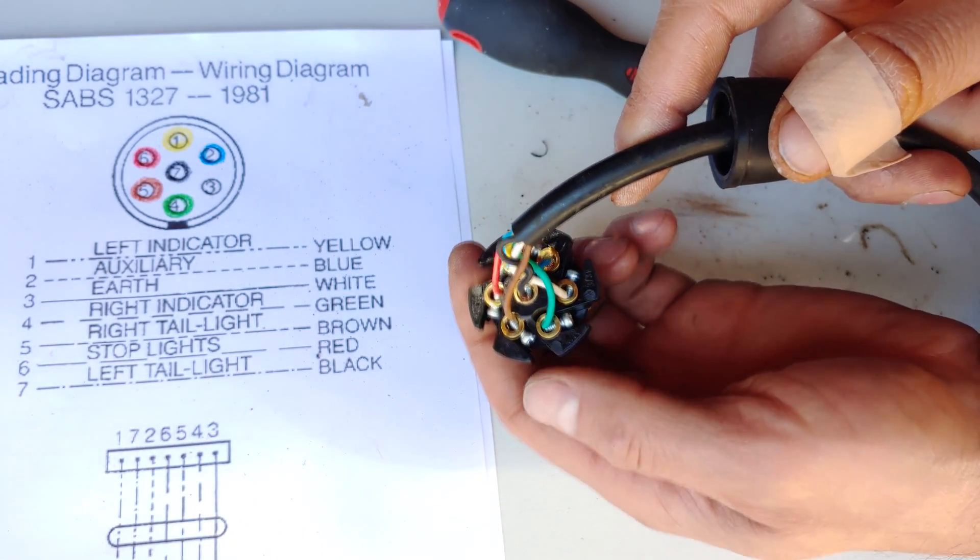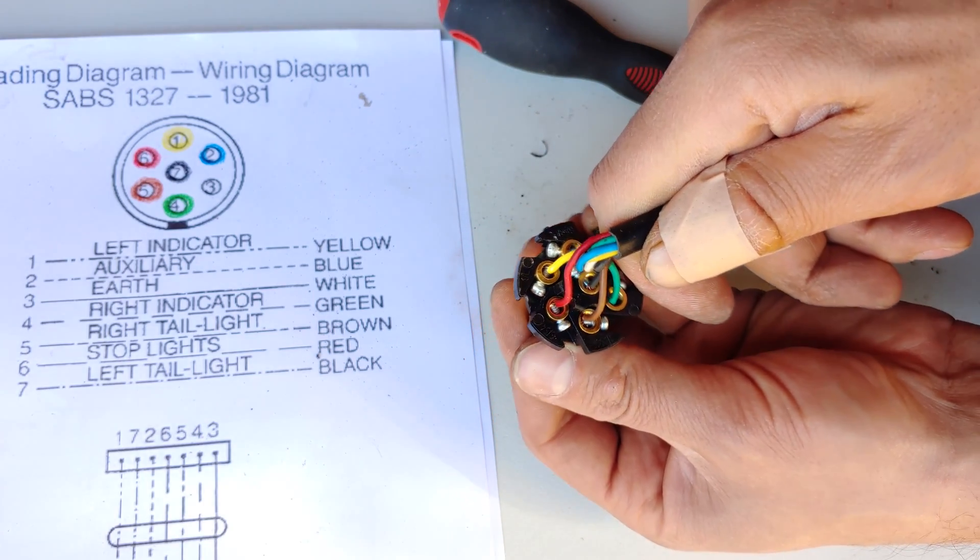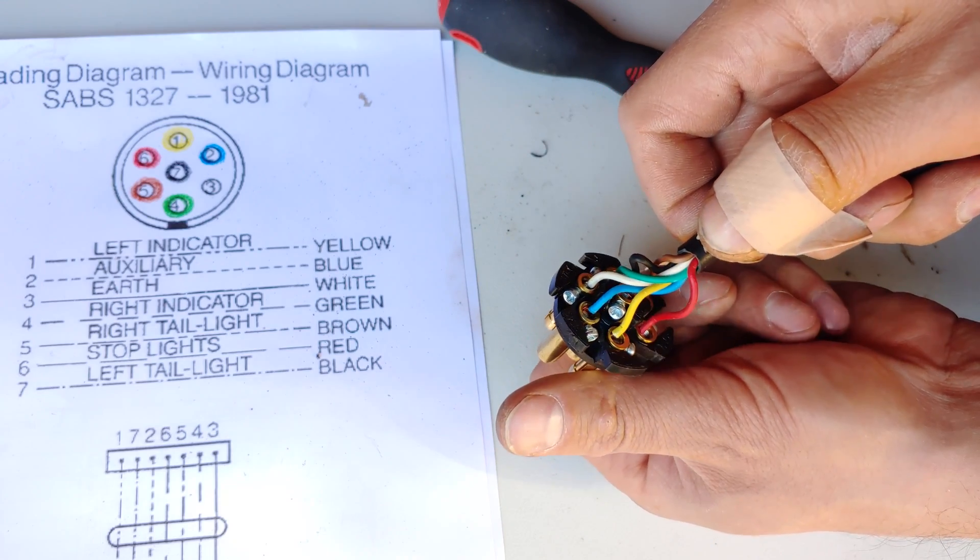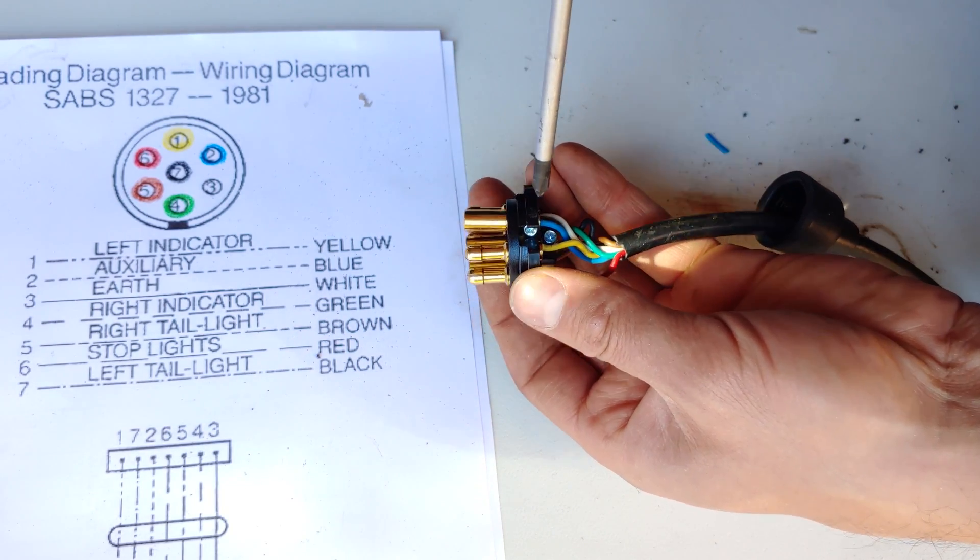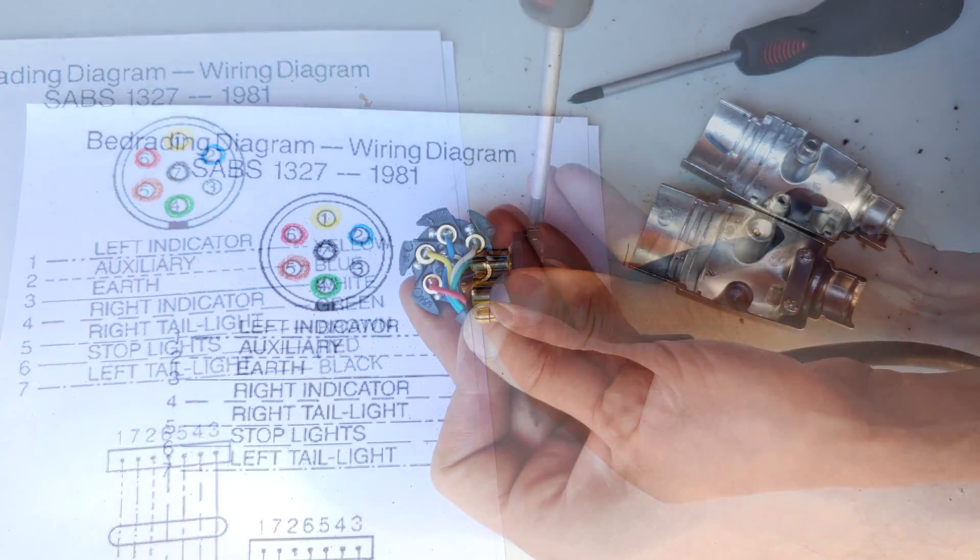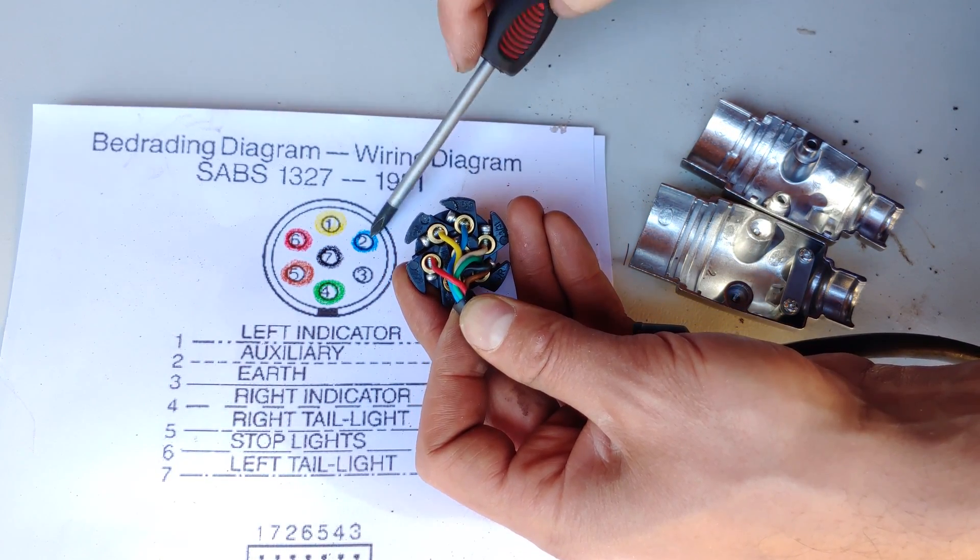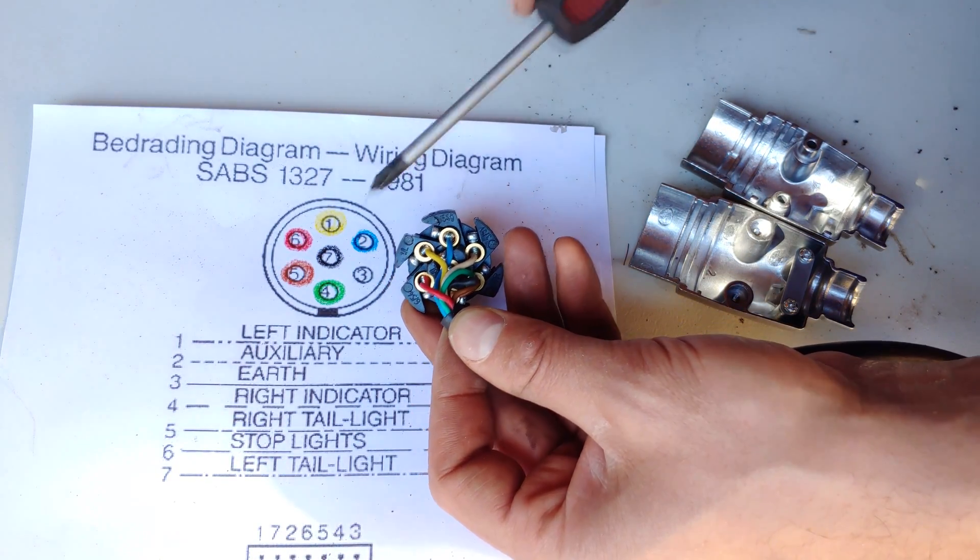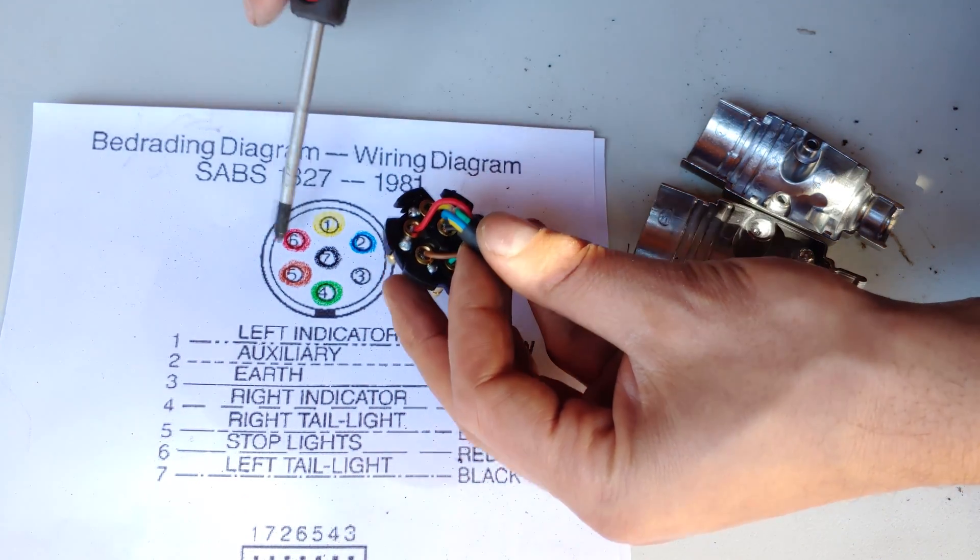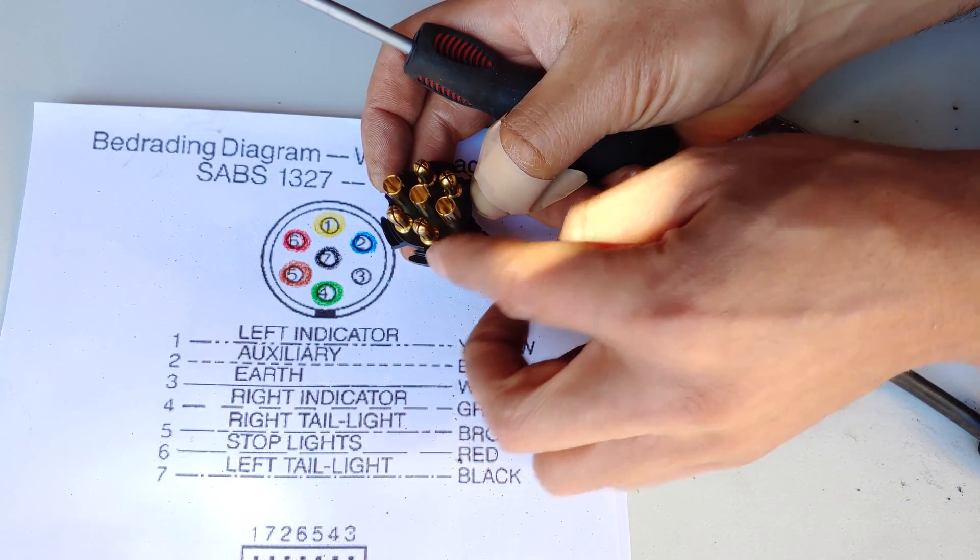This is what it should look like. As you can see, the wires are right in there, screws are tightened on the wires. Do a last check, make sure they're all tight. Just quickly checking the pinouts: one yellow, two blue, three white, four green, five brown, six red, seven black. Looking at that, yes, so that is correct.